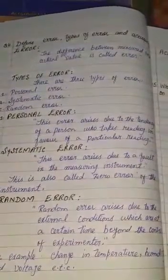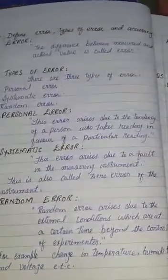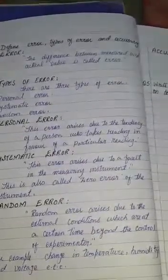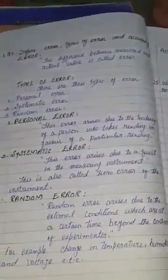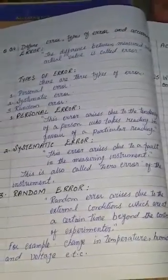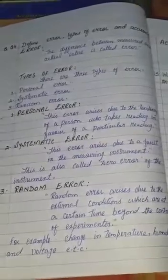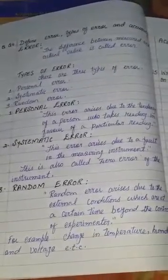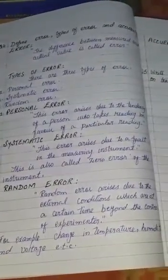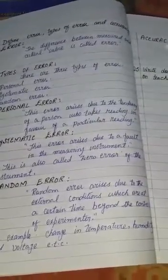Question number four: Define error, types of error, and accuracy. Error — the difference between the measured and actual value is called error. Types of error: there are three types — number one: personal error, number two: systematic error, and number three: random error. Personal error: this error arises due to the tendency of a person who takes a reading in favor of a particular reading.